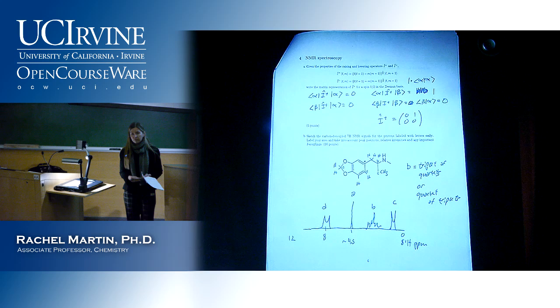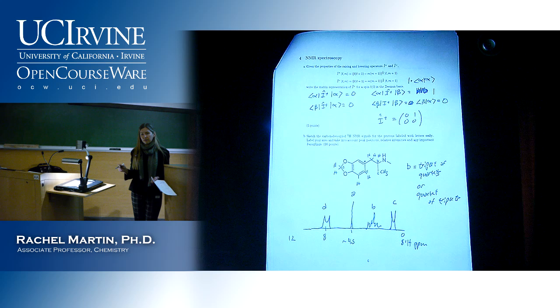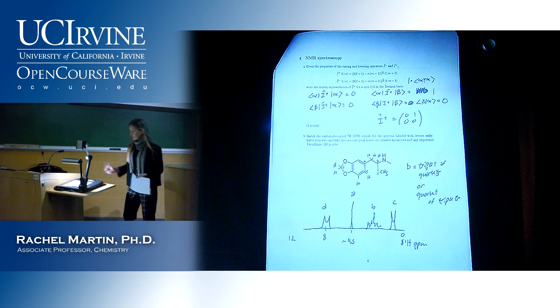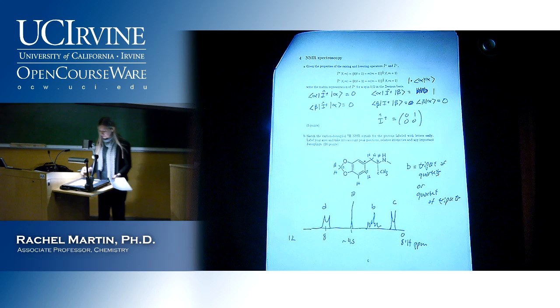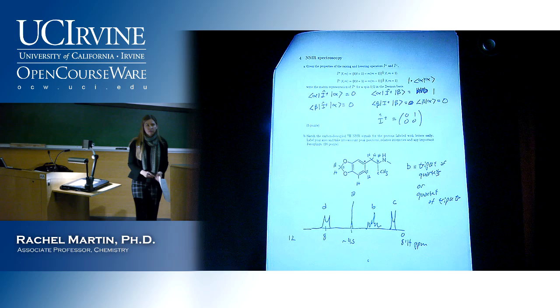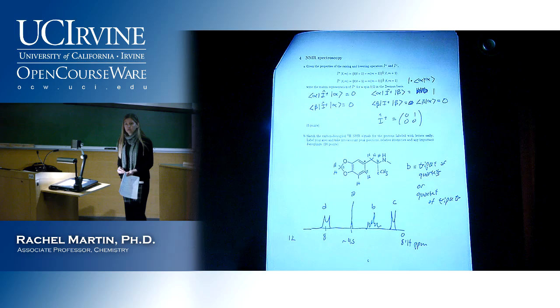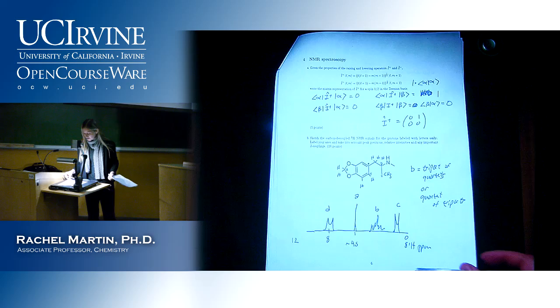For the chemical shift values, you got points if they were in the right order relative to each other and the scale was something reasonable — thinking the ether was a carbonyl at 12 ppm was not reasonable. The NH proton doesn't show up in the splitting because it's exchangeable — it pops on and off all the time, exchanging with the solvent. If you included it in the splitting I took off a point, but it wasn't a huge deal if you understood the rest.